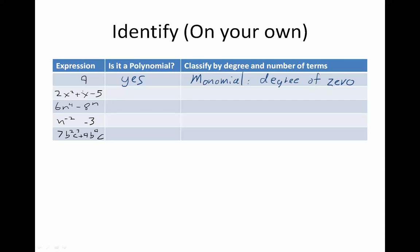So, 2x² + x - 5. Is it a polynomial? Yes, it is. What type of polynomial is it?